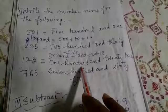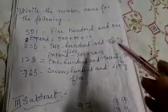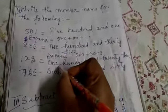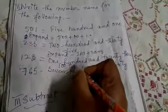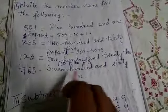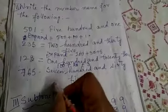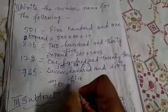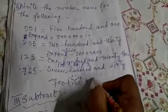123: 100 and 23. How will you do that? Expand: 100 plus 20 plus 3. 765. 700 plus 60 plus 5.